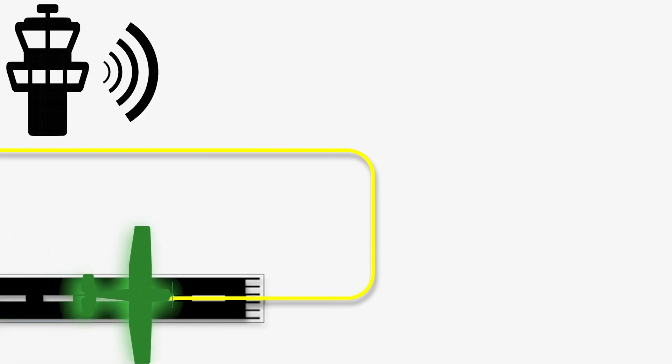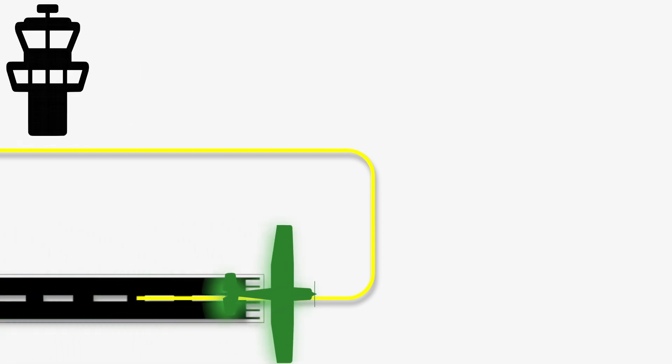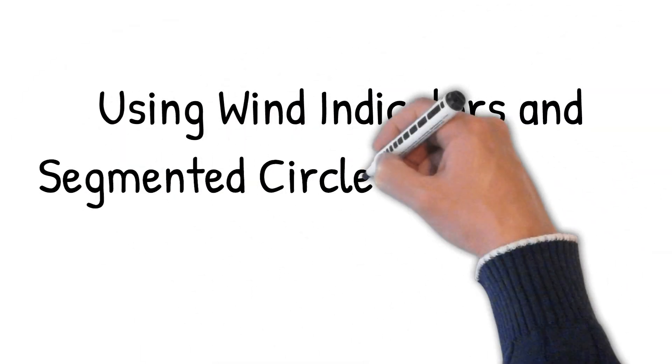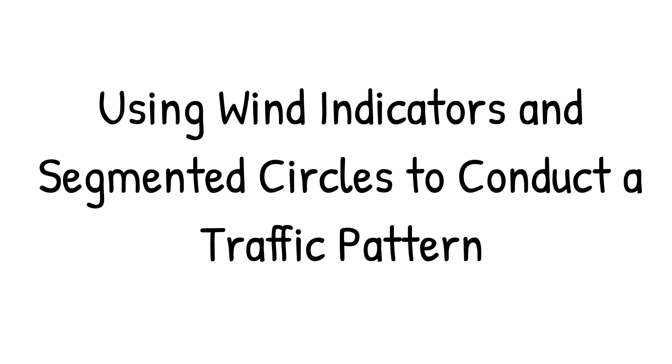At towered airports, the controller will have the pilot depart the pattern based on the pilot's desired direction of flight after leaving the pattern or traffic in the traffic pattern and in the nearby airspace using wind indicators and segmented circles to conduct a traffic pattern.